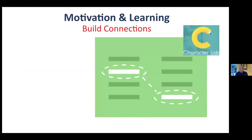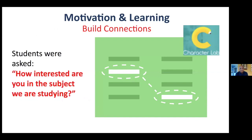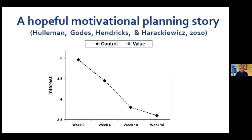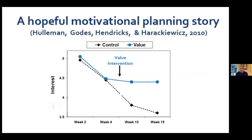In the field test, Chris and associates followed two randomly selected groups of students across a semester. Both groups were asked the very same question: 'How interested are you in the subject we are currently studying?' The question was asked at the beginning, week two, week four, week ten, and week fifteen. The control group — shown with the black dotted line — were treated normally and did not receive the Build Connections Tool. They showed strong interest at the beginning but their interest dropped off significantly as the semester went along.